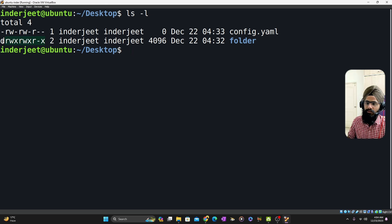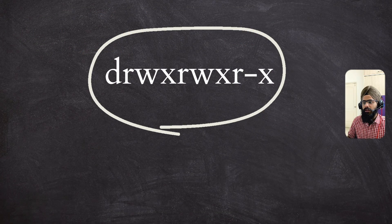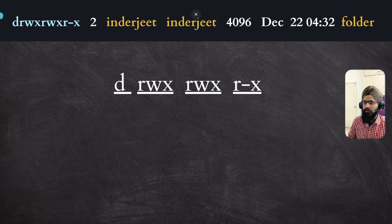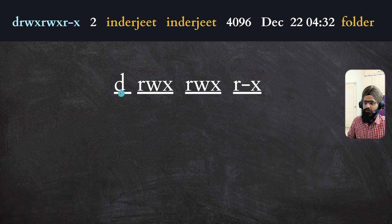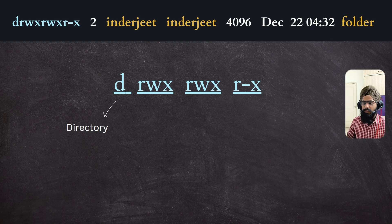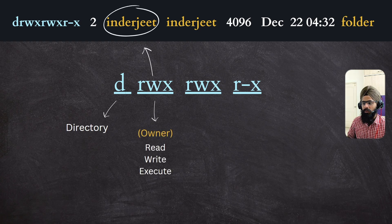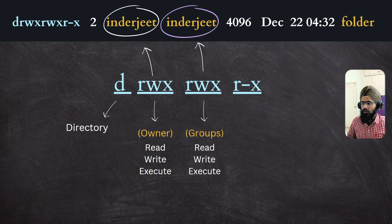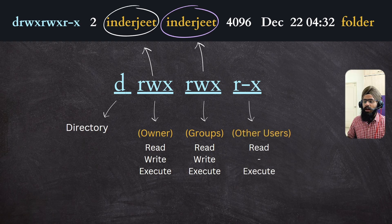You may be confused with the left side output. Let's break it down. There are 10 characters shown. The first character is 'd' if it is a directory, or a dash if it is a file. Then the permissions start: rwx for the owner's permission — in our case the owner is 'inderjeet' — then rwx for the group, and then the others' permissions.